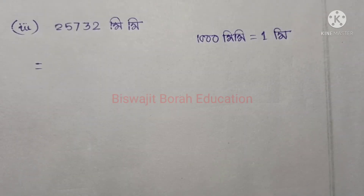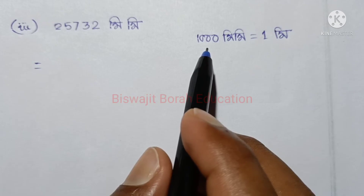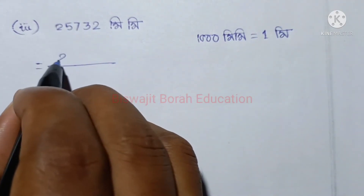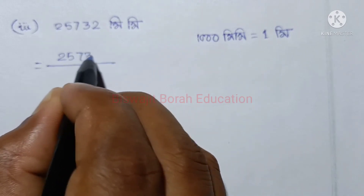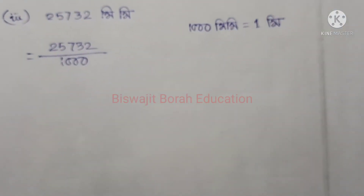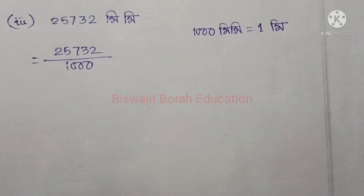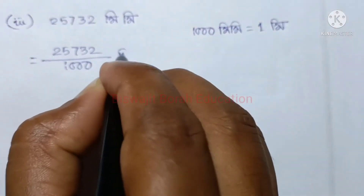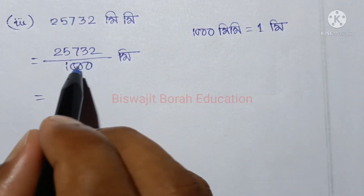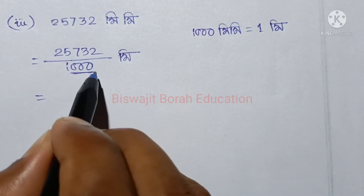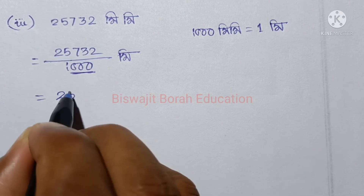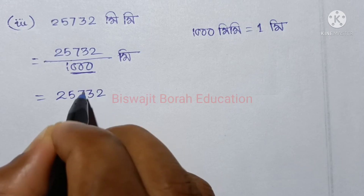We can see this in meters. So 25,732 mm divided by 1,000 gives us the answer in meters — that is 1,000 meters equivalent.